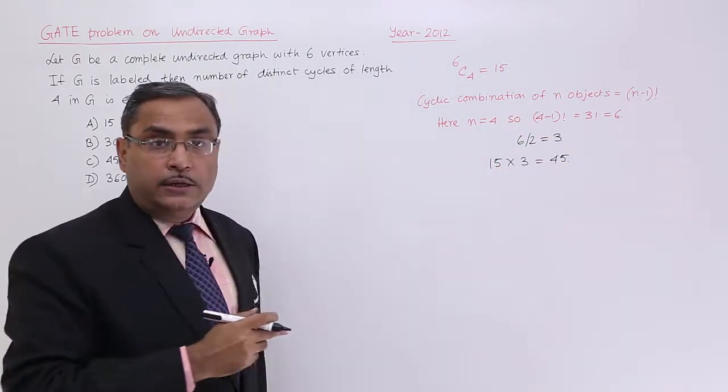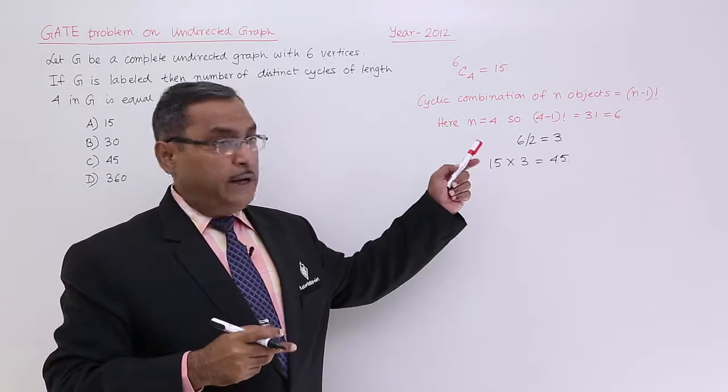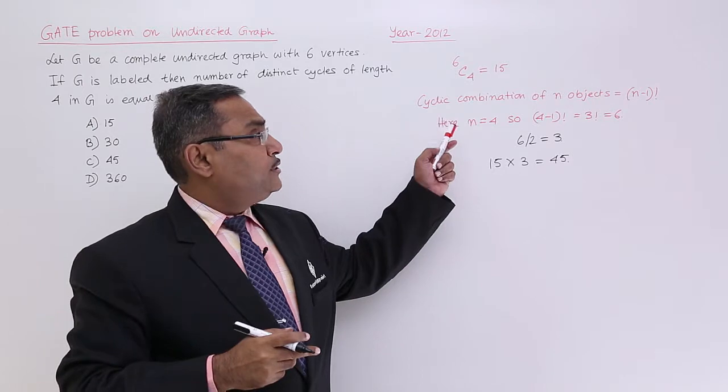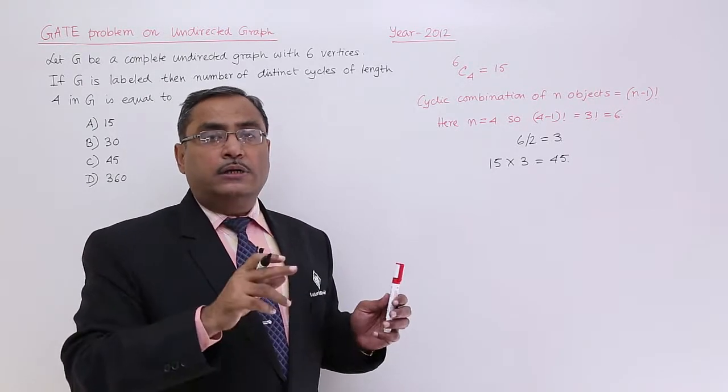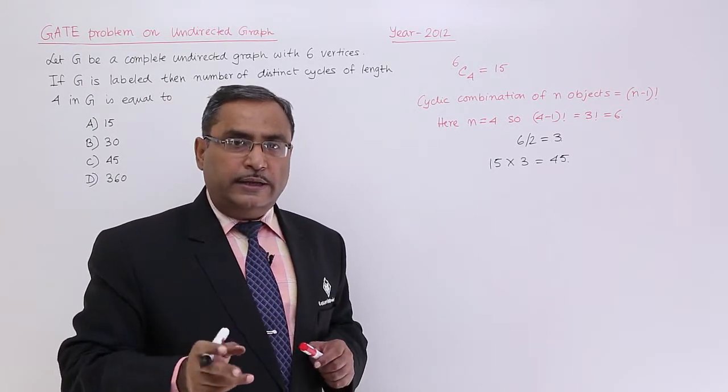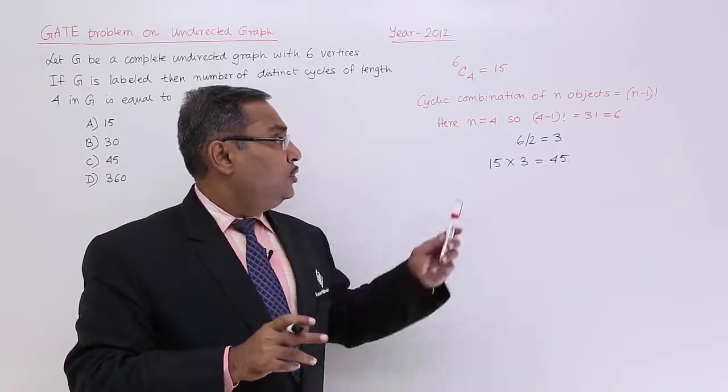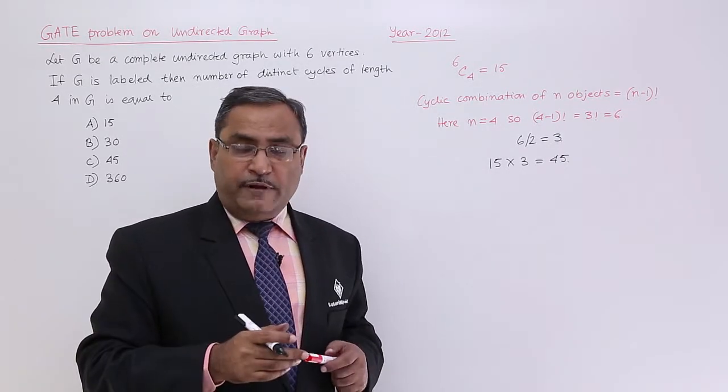I think you are getting this idea. 6C4 is equal to 15. For the combination of n objects arranged in a cyclic order, it is (n-1) factorial. Here the value of n is equal to 4, so that is why it is 3 factorial, which means 6.